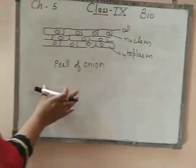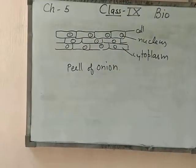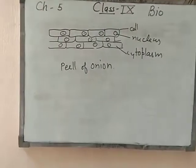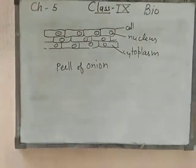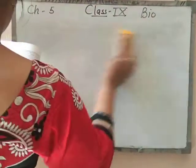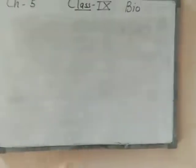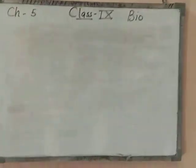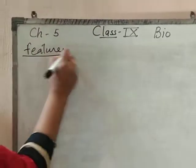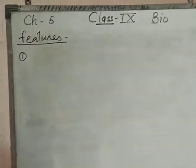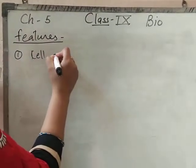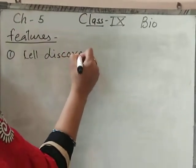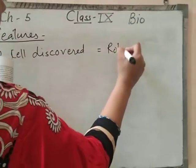This proves that all living organisms, whether it is a plant or an animal, all organisms are made up of cells. Now, some features. Firstly, the cell was first discovered by Robert Hooke.